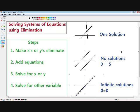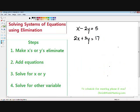So let's get started with an example. Here we have the line x minus 2y equals 5, and we have another line 2x plus 3y equals 17. And I wrote the steps for you on the left-hand side of the screen, and step number one is make x's or the y's eliminate.